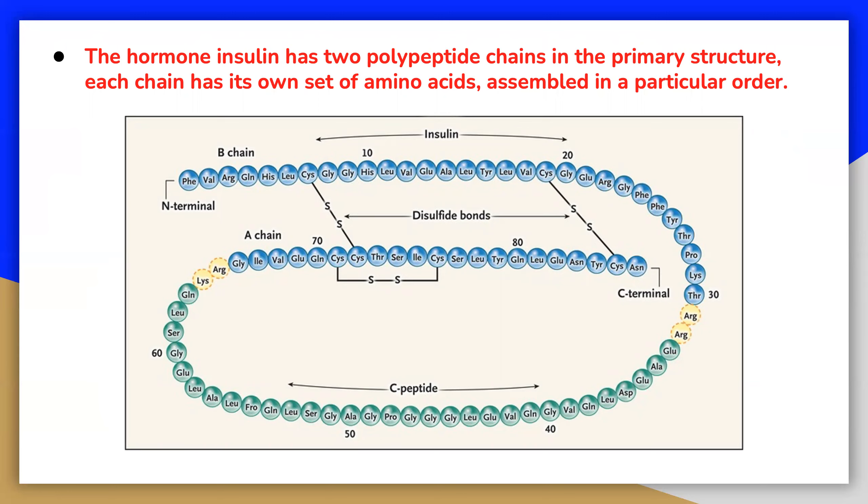The sequence of the protein is determined by the DNA of the gene that encodes the protein. A change in the gene's DNA sequence may lead to a change in the amino acid sequence of the protein. Even changing just one amino acid in a protein sequence can affect the protein's overall structure and function.